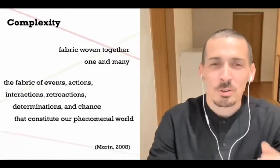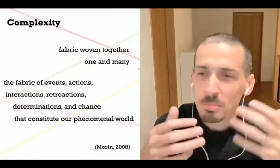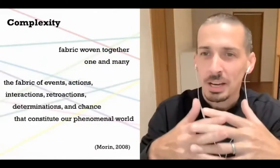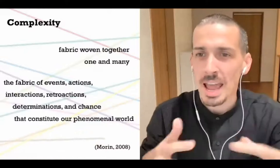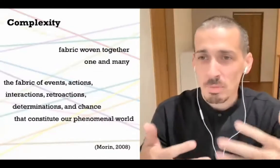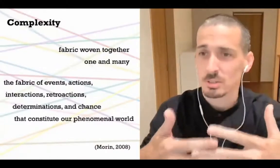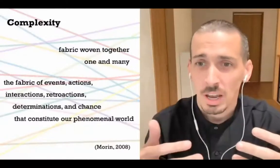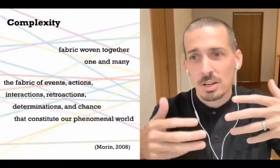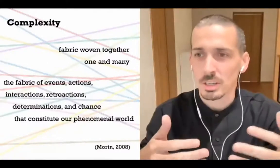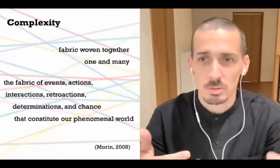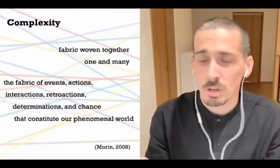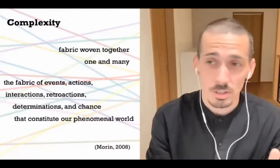In contrast to simplicity, complexity is a fabric of elements woven together — it's the one and the many. We can see a pattern through the interactions of colors as we look at the fabric as a whole. And in complexity, these interactions are constantly changing, giving rise to different emergent patterns at different times. In short, no two classrooms are the same. No two learners are the same.